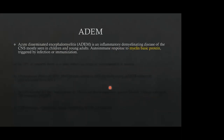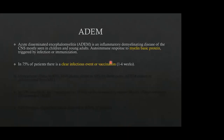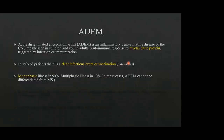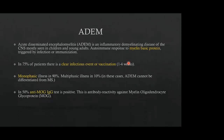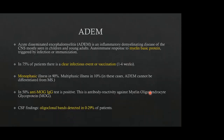ADEM is an inflammatory demyelinating disease of the CNS, mostly seen in children and young adults. It is an autoimmune response to myelin basic protein triggered by infection or immunization. In 75% of patients, a clear infectious or vaccination event precedes disease onset by one to four weeks. It is a monophasic illness in 90% of cases; in the 10% with multiphasic illness, it cannot be differentiated from MS. In 50% of patients with ADEM, the anti-MOG IgG antibody is positive — a reactivity against myelin oligodendrocyte glycoprotein. CSF findings are often nonspecific with absence of oligoclonal bands, though detectable in up to 29%.